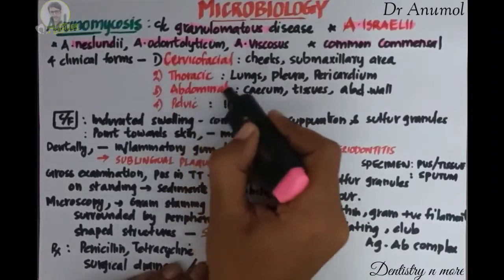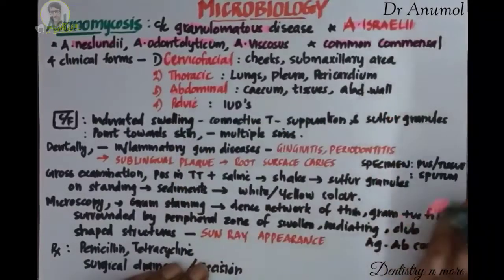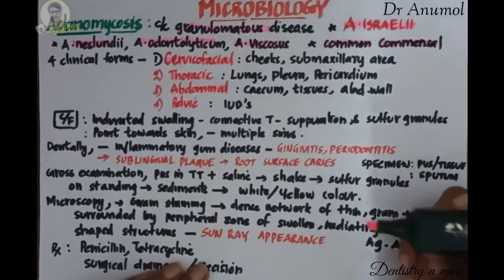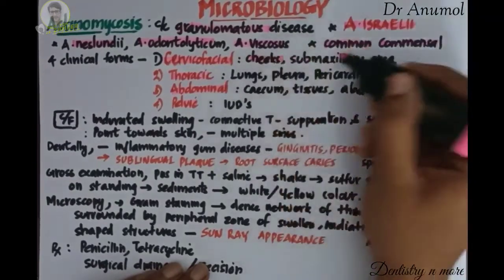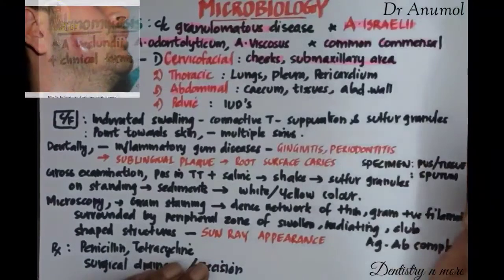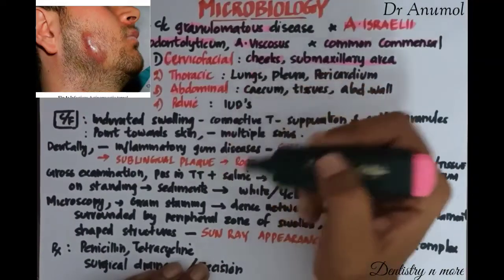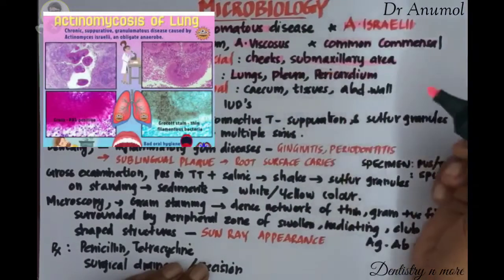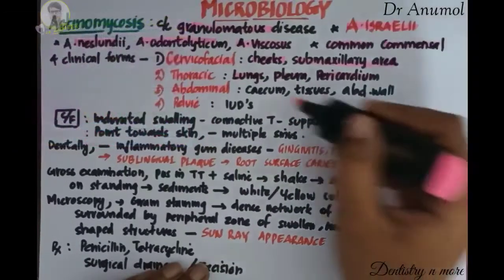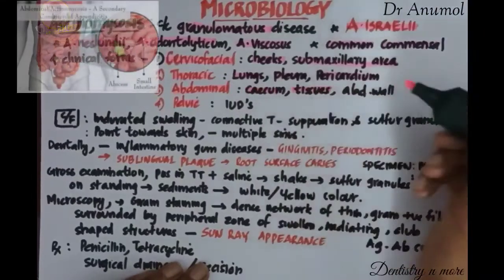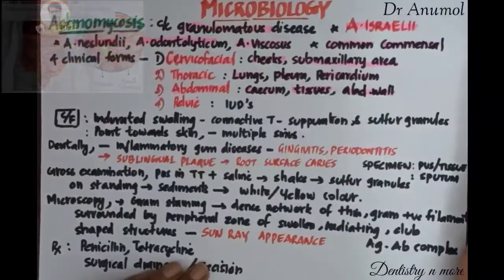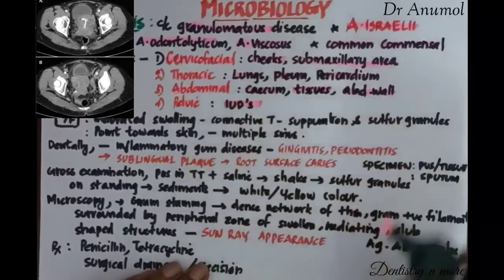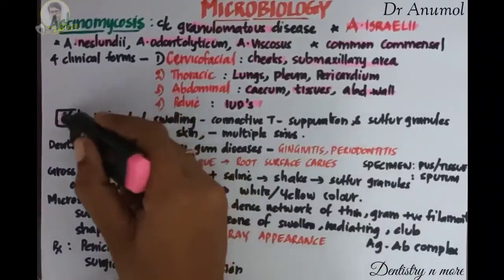Actinomycosis has four clinical forms: cervicofacial, thoracic, abdominal, and pelvic. In the cervicofacial form, we find indurated lesions in the cheeks and submaxillary area. In the thoracic form, it infects the lungs, which may involve the pleura and pericardium. In the abdominal form, it infects the cecum, surrounding skin tissues, and abdominal wall. In the pelvic form, it is seen in association with the use of intrauterine devices.